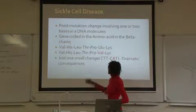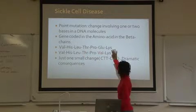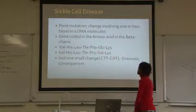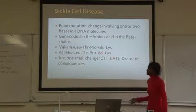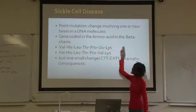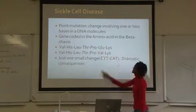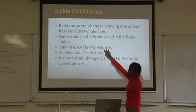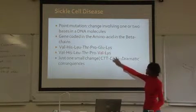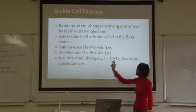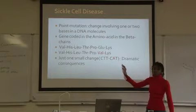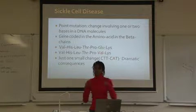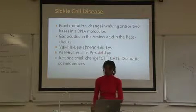Here you have a sequence of amino acids in a person who does not have sickle cell disease, and here is the sequence in a person who does. You go from glutamic acid to valine — it's just this small change, from C to A in the DNA base, that causes these dramatic consequences, making the shape of the hemoglobin look like a sickle and causing many problems.